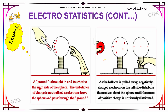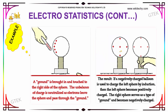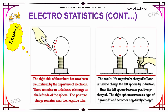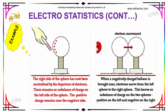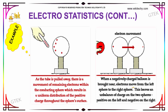As the balloon is pulled away, the negatively charged electrons on the left side distribute themselves about the sphere until the excess positive charge is uniformly distributed. As a result, if a negatively charged balloon is used to charge the left sphere by induction, then the left sphere becomes positively charged. Therefore, the right sphere serves as a type of ground and becomes negatively charged. Finally, the two neutral conducting spheres are touching one another, allowing for the free movement of electrons between them. This is how this example of electrostatics is demonstrated.